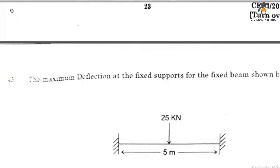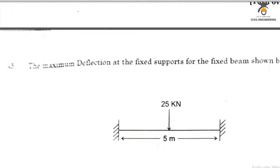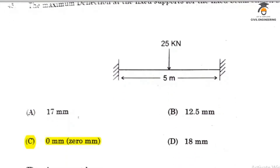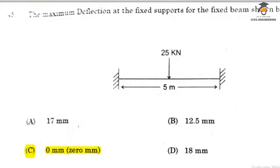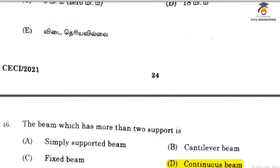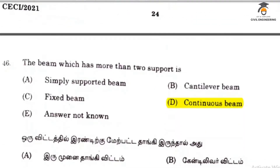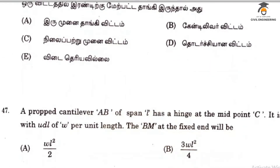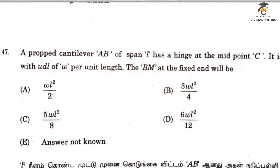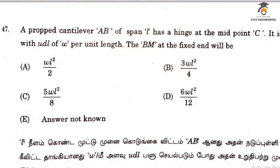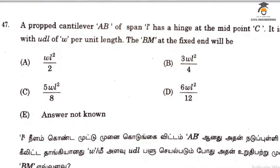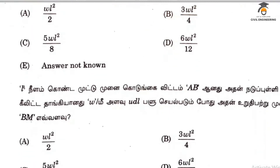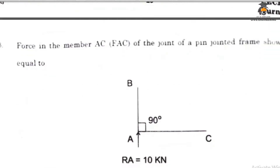The maximum deflection of the fixed support of a fixed beam is shown below. Deflection of the fixed support of a fixed beam is 0. A beam which has more than 2 supports is a continuous beam. The proper cantilever answer is 0. The negative charge W3 becomes 4, so the answer will be 4.